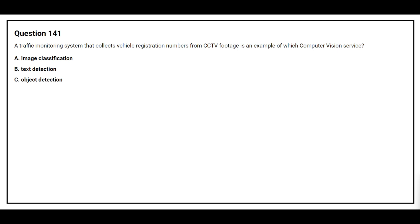Question number 141. A traffic monitoring system that collects vehicle registration numbers from CCTV footage is an example of which computer vision service? Option A: Image classification. Option B: Text detection. Option C: Object detection. The correct answer is Option B, Text detection.